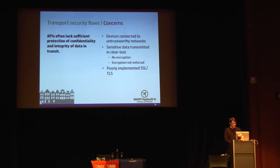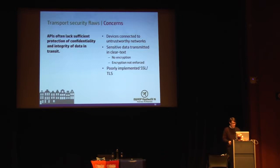Another common flaw in APIs is the lack of transport security. Attackers can often man-in-the-middle traffic when various systems are using insecure communication. We very often see mobile applications that are not requiring encryption, just sending data over plain HTTP. We also see poorly implemented SSL and TLS, and as we've seen in the last year there are a number of SSL/TLS flaws — POODLE, ShellShock, and others. Ensure your applications are protecting sensitive data in transport.